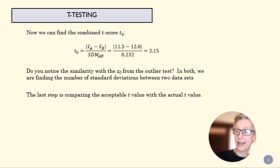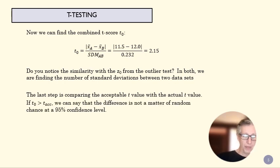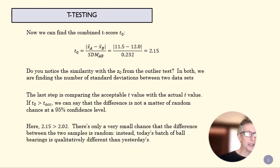And then just like the outlier test, we're going to compare that actual T variance to an acceptable T variance. And if that actual variance is bigger than our acceptable variance, we can say this isn't just a matter of random chance. This variation must mean something systematically has changed. And that's the case here. We have 2.15 is bigger than 2.02, and that means there's only a small chance that this difference is a matter of random variation. It looks like today's batch of ball bearings is actually qualitatively different than the one yesterday. So that difference is statistically significant.